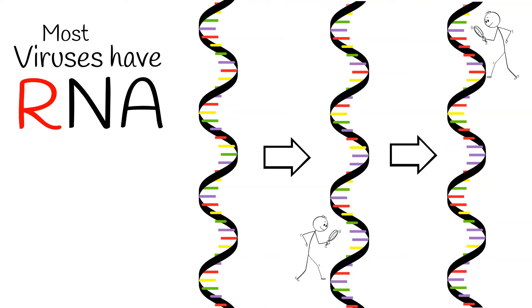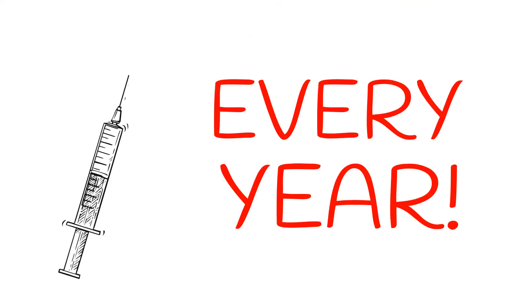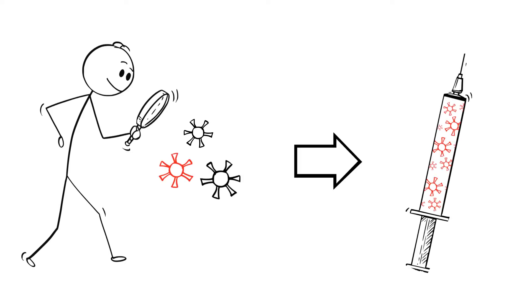Which means that the scientists need to create a vaccine that can protect us against more than one, slightly different versions of the same virus. That's why we need to get a flu shot every year. The scientists are constantly looking at which versions of the flu are most likely to make us sick and updating the vaccines to match.